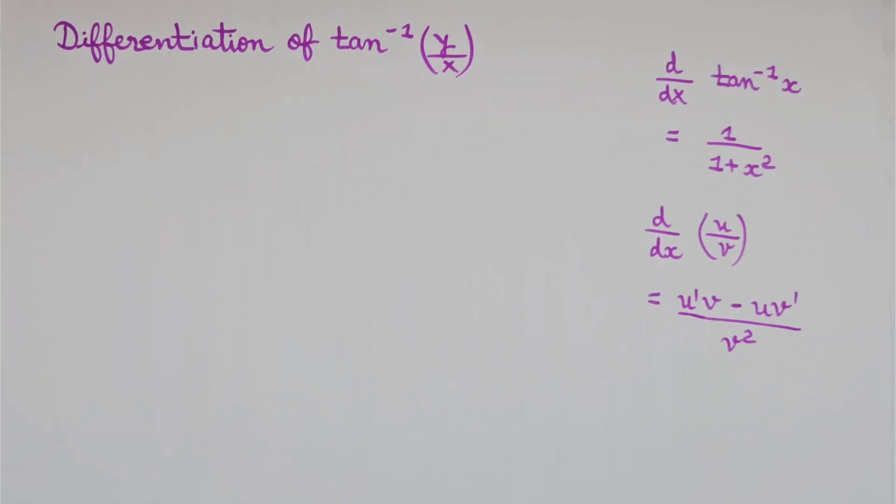For performing the differentiation of tan inverse y by x, we must be aware of two formulas which is d by dx of tan inverse x which is equal to 1 upon 1 plus x square and d by dx of u by v which is equal to u dash v minus u v dash upon v square.